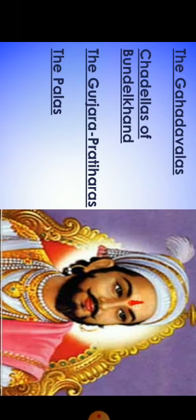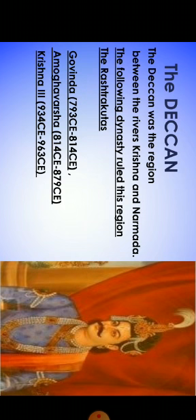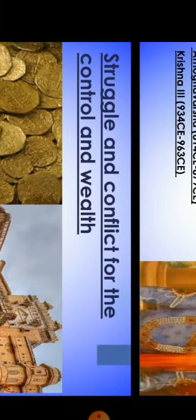After this North India zone, we had the Deccan — the region between the river Krishna and Narmada. We had here the Rashtrakutas, who came to power in the 8th century. Dantidurga was the founder of the Rashtrakuta kingdom. The most powerful rulers were three: Govinda, who ruled from 793 to 814; Amoghavarsha, who ruled from 814 to 878; and Krishna III, who ruled from 934 to 963 CE. Apart from these kings, we also had the Chalukyas, the Kakatiyas, the Yadavas, and the Hoysalas of Dwarasamudra in the Deccan region.